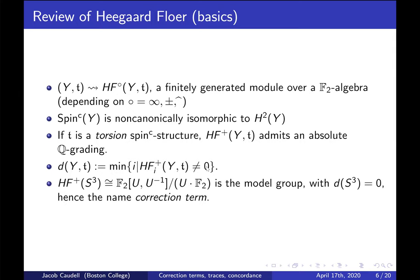This Q-grading allows us to define a numerical invariant of a spin-c 3-manifold: it's the minimum grading in the support of HF⁺(Y, t). The HF⁺(S³) is a positive tower, and the correction term d(S³) = 0. One way to think about this invariant is that it measures how far off from S³ this group is — for a general 3-manifold with a torsion spin-c structure the group has features resembling the S³ case, and the correction term tells us how far off the Q-grading gets. It's called a correction term or d-invariant.